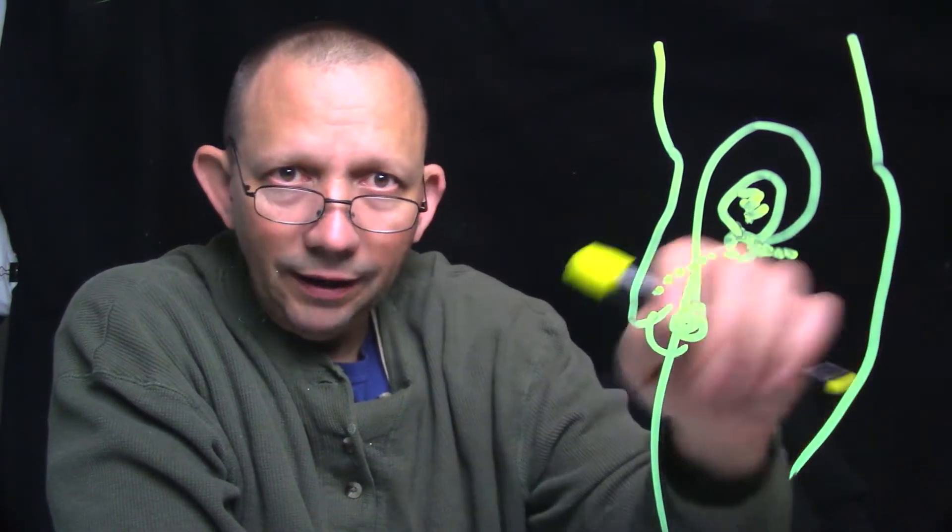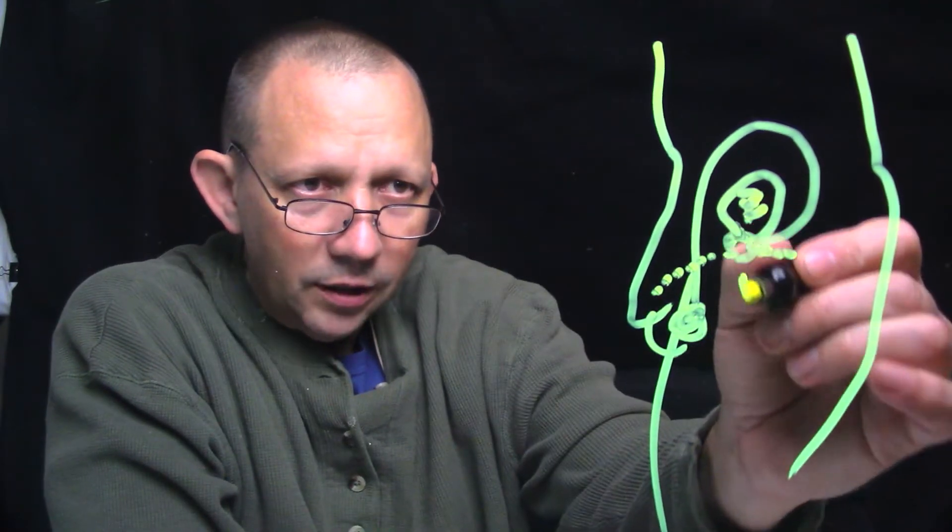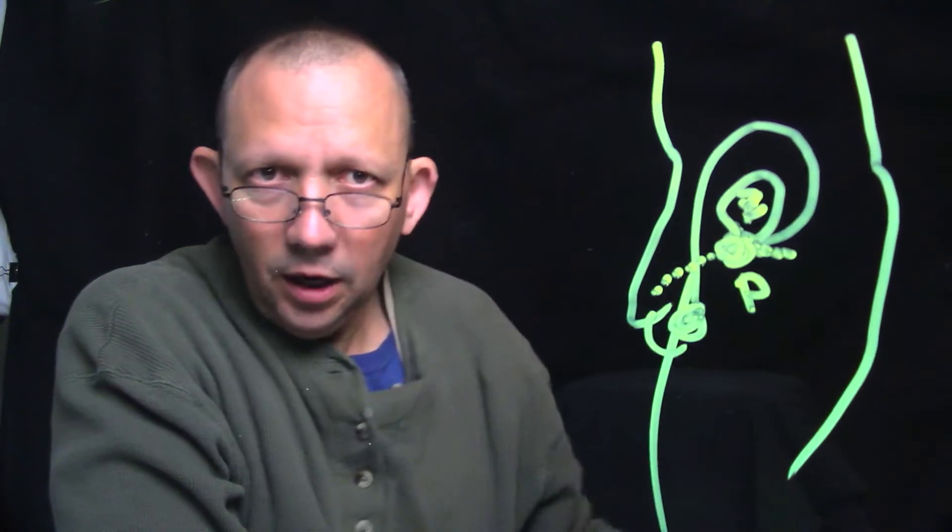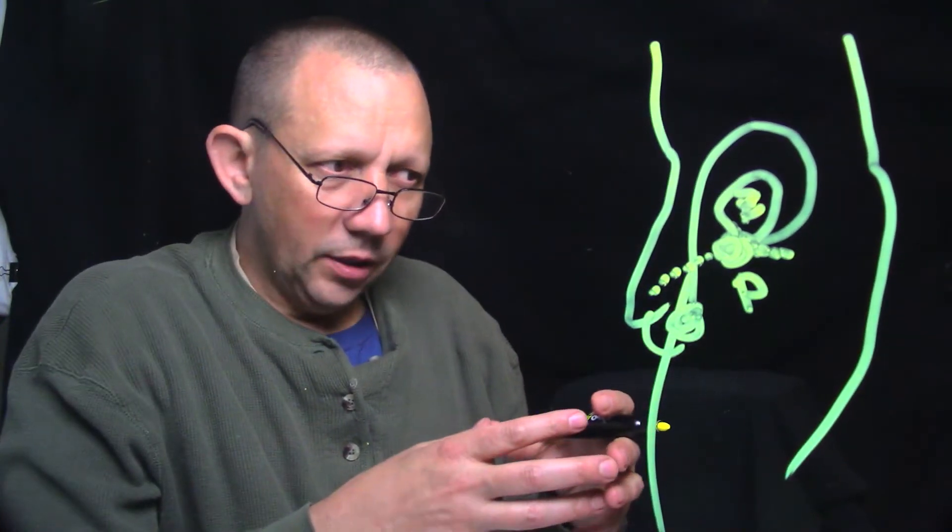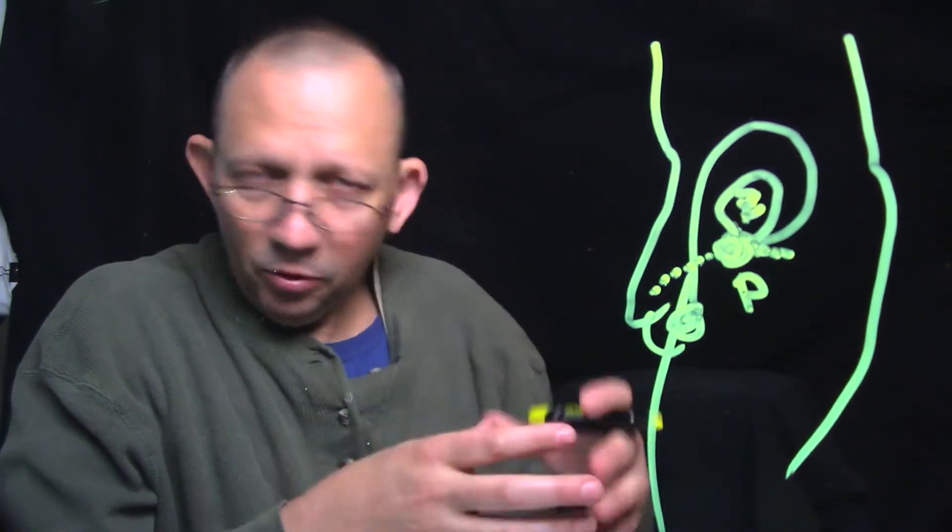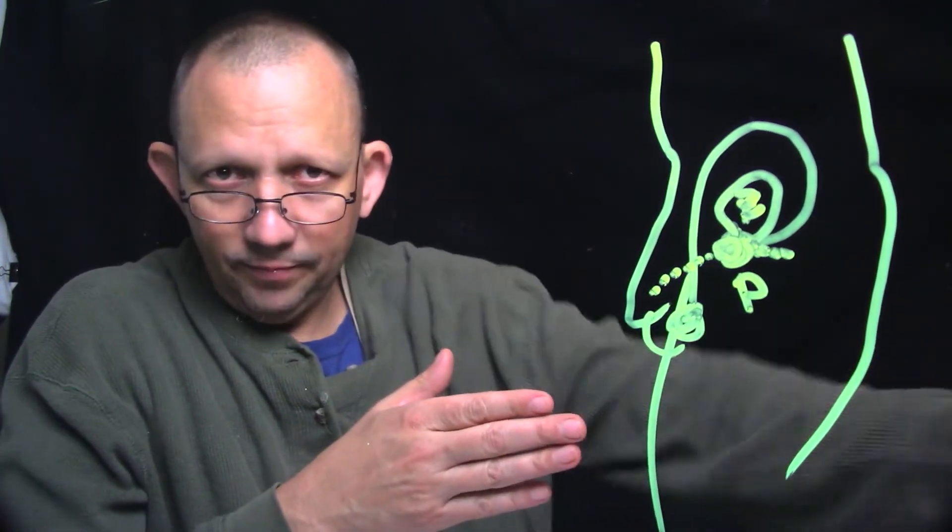Here, where you have what's called the seminal vesicles, which are two little areas off the edge of the prostate. Here's the prostate in here with this little guy right there. The prostate is just a gland, and all it does is create some of the fructose and some other supporting chemicals to help the sperm survive on their journey.